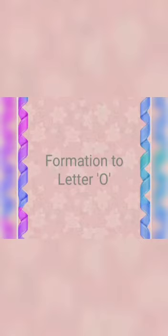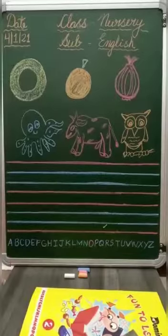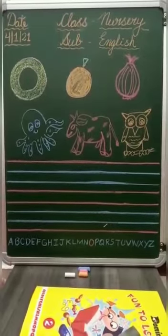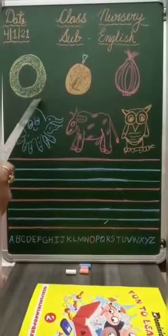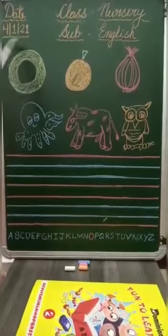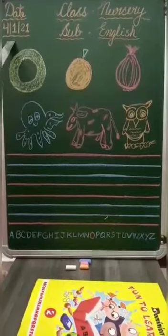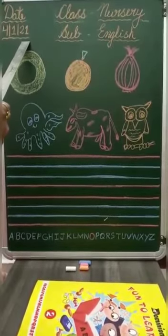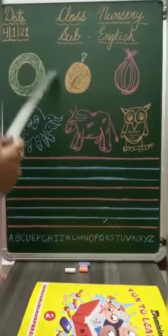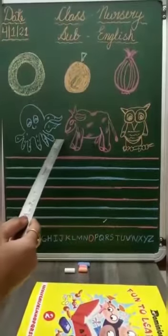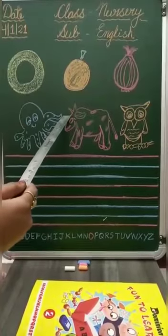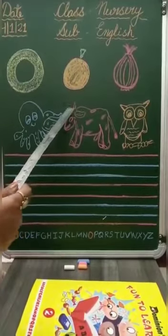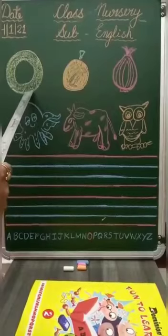Now kids, we will learn its formation. Hello dear kids, after winter break, today we will learn a new letter, letter O. First of all, which date is today? Today is 4th of January, 2021. Now kids, look at here. These are the pictures related to letter O. Today we will recognize this picture and we will learn its phonics too. So, speak with ma'am.